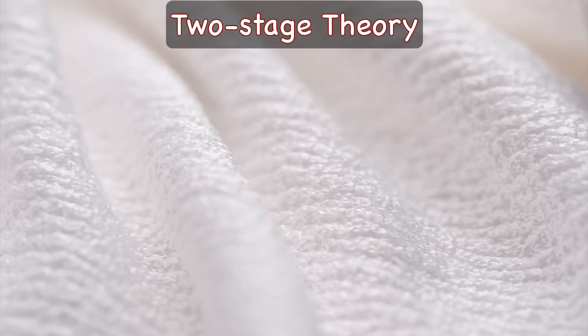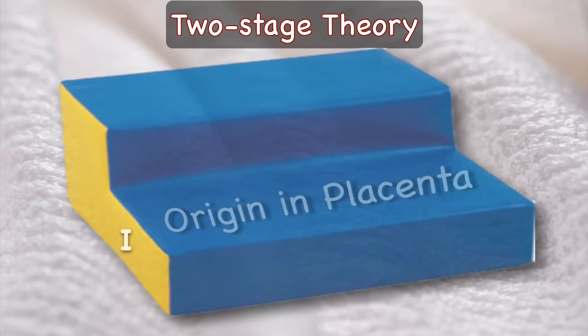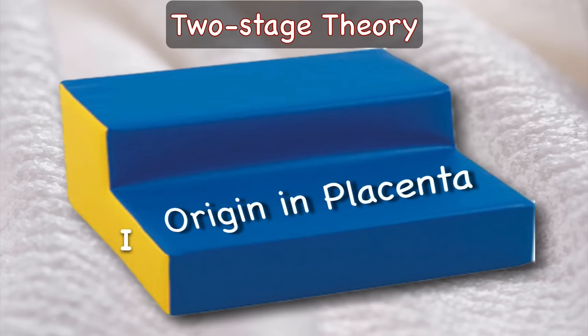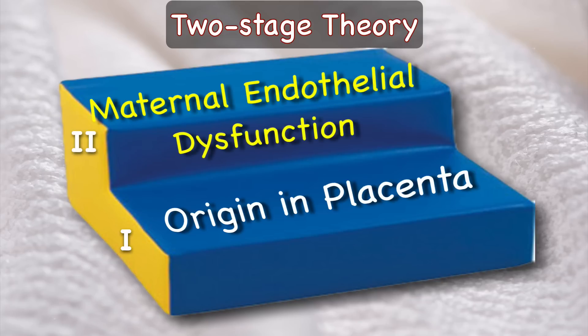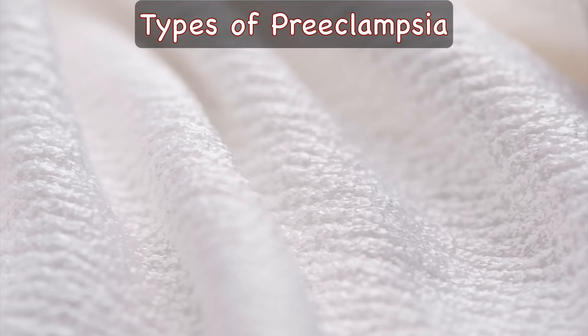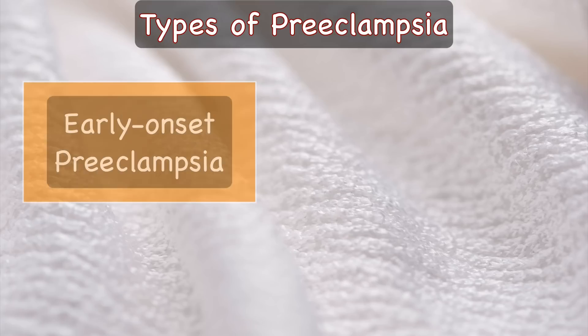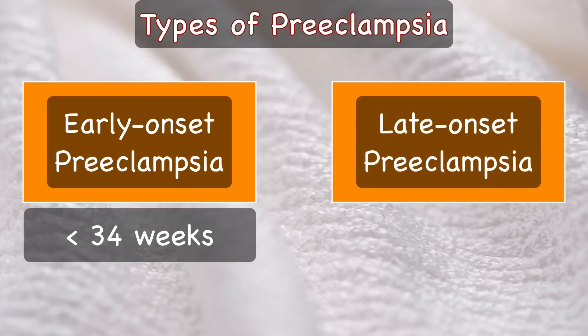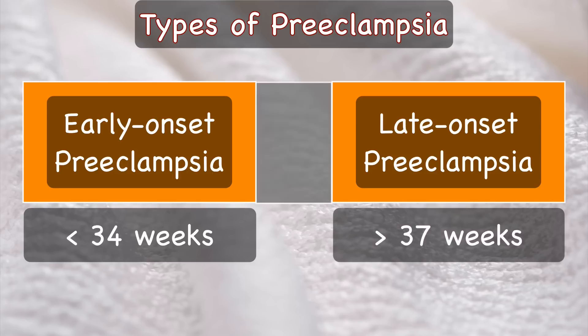Pre-eclampsia is now considered as a two-stage disease. Proponents of this theory hypothesize that pre-eclampsia is a systemic syndrome that originates in the placenta and is characterized by maternal widespread endothelial dysfunction. Pre-eclampsia has two separate types based on when the disease manifests: early onset pre-eclampsia, also known as pre-term pre-eclampsia, which occurs prior to 34 weeks, and late onset pre-eclampsia, also known as term pre-eclampsia, which manifests after 37 weeks. Gestational age between 34 to 37 weeks is considered the grey zone.